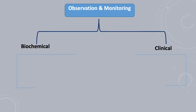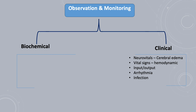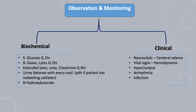Close monitoring is an essential part of DKA management, and that is why these patients are usually admitted to a high-dependency unit or PICU. Clinically, you need to monitor neurovitals for any development of brain injury, especially cerebral edema. Monitor vital signs for hemodynamics, strict input and output, and arrhythmia, as these patients are at risk of electrolyte imbalance. You will also monitor the patient for infection. Biochemically, glucose is checked every one hour, and blood gases and electrolytes every two hours, along with extended electrolytes, urea, and creatinine. These frequencies can be adjusted according to the patient's status and clinical improvement. You also need to monitor for ketosis by urine ketones or beta-hydroxybutyrate.